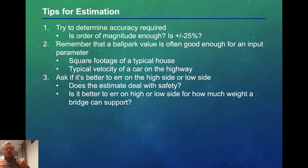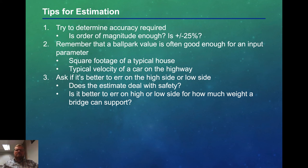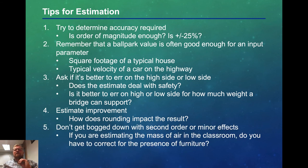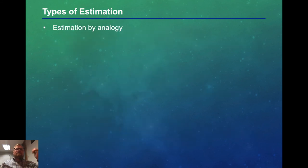Next, ask whether it's better to err on the high side or the low side. Does the estimate deal with safety? You want to err on the safer side. For example, is it better to err on the high or low side for how much weight a bridge can support? The answer is to err on the low side, so that even if you're wrong, you can still support a minimum amount of weight. Once you've made your estimate, you can then improve it by looking at how much rounding might impact the result, and don't get bogged down with second-order or minor effects. For example, if you're estimating the mass of air in a classroom, it probably doesn't matter whether there's furniture in there — just find the dimensions and calculate from there.